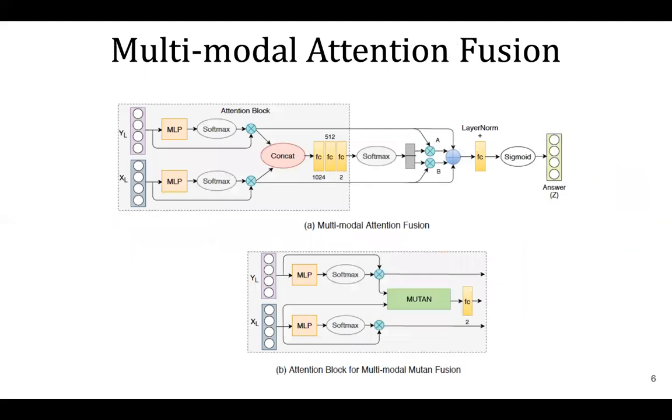In this work we use two types of fusion mechanisms. Multi-modal attention fusion where we apply simple concatenation to combine initial attendant features from both image and language modalities and apply a series of fully connected layers to generate weighted features. The final weighted features represent how much importance we should give on each modality.